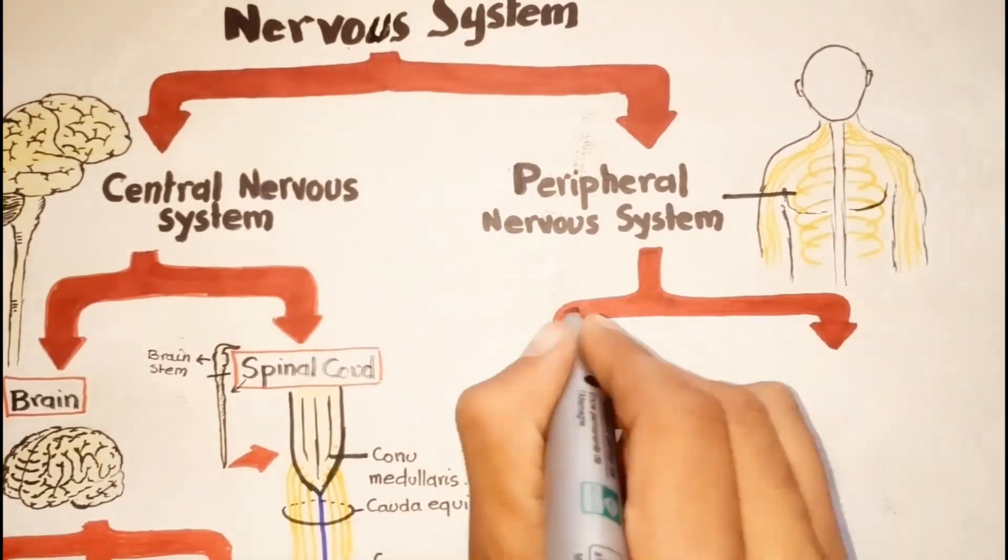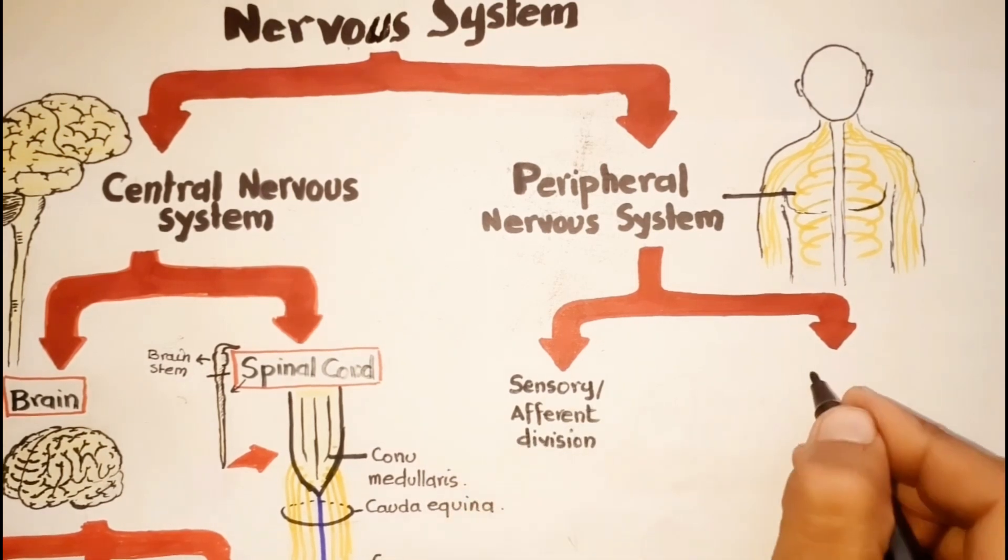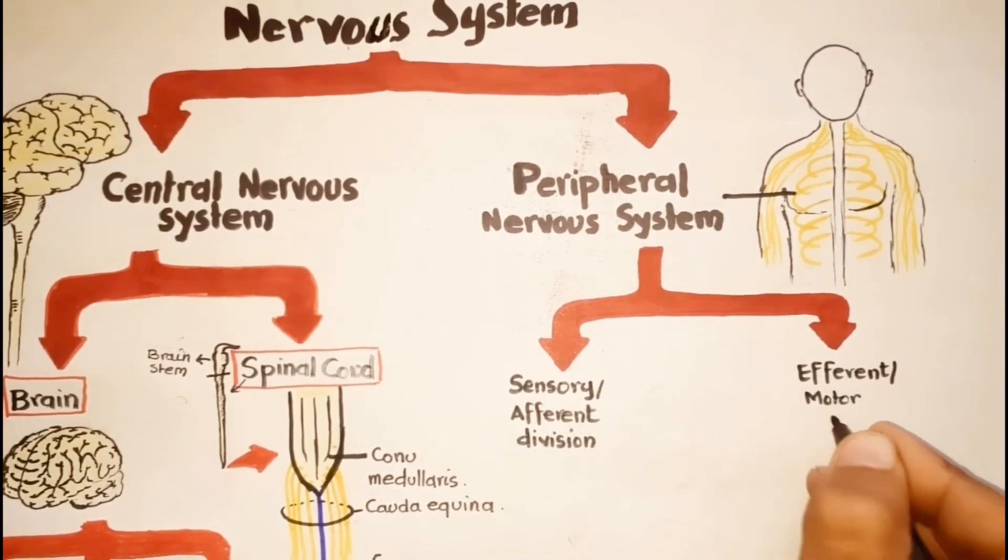The peripheral nervous system is subdivided into the afferent division, or sensory division, and the efferent division, or motor division.